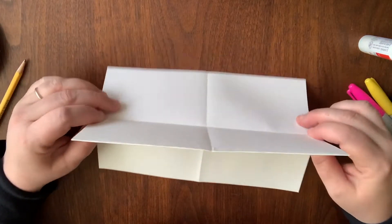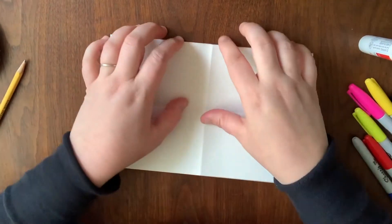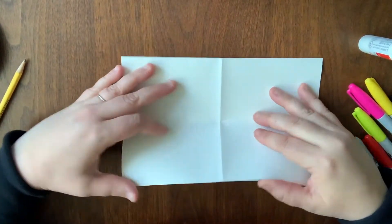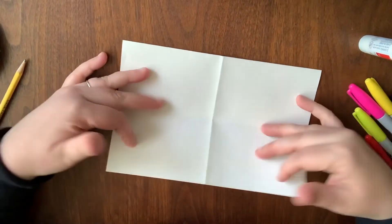We're going to make one single cut and it has to be on the edge that's folded, not on the edge that opens. We're going to cut this fold right here, just to the middle.